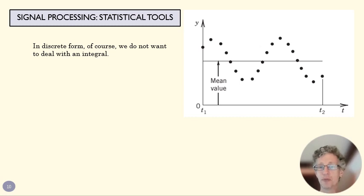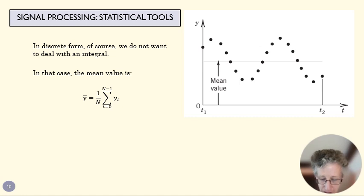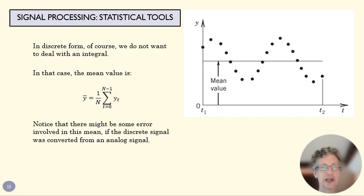In discrete form, we can't take an integral, so we take an average of our data points. Sum up the y value of your data points, divide it by the number of data points, and you get the average strength of your signal. That's the same thing as the mean, but in discrete form. Most of the time we're dealing with discrete data sets, so we'll use this equation more than the continuous one.